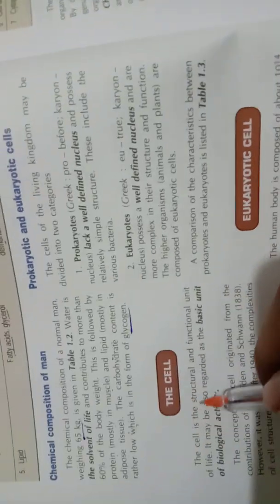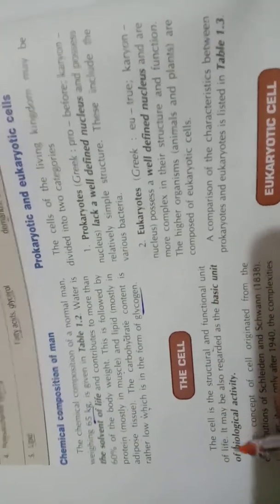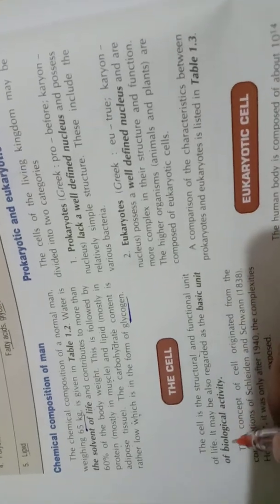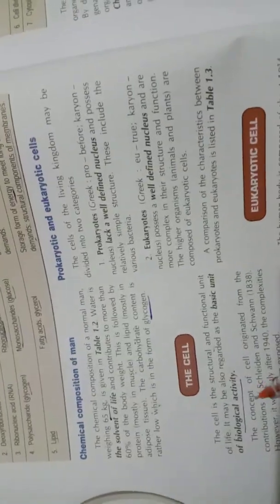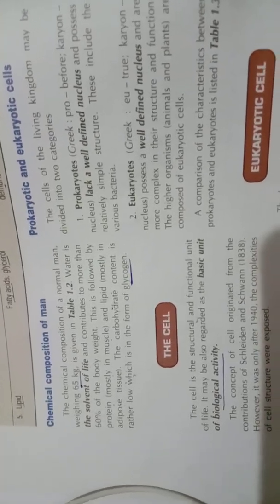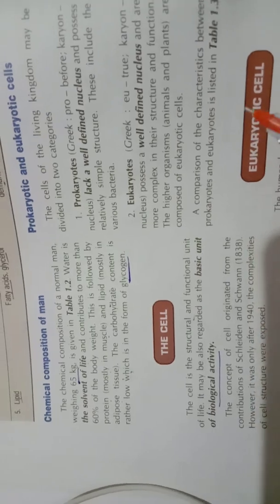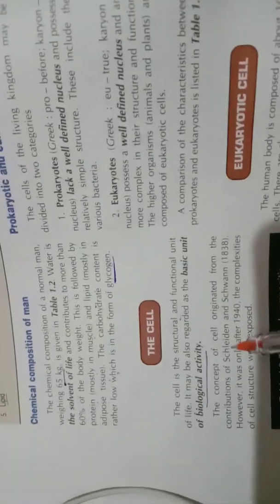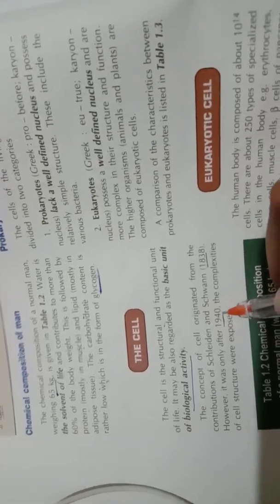The cell is the structural and functional unit of life. It may also be regarded as a basic unit of biological activity. The cell wall in plant cells and bacteria provides protection to the cell. The concept of the cell originated from the contribution of Schleiden and others around 1838, and it was only after 1940 that the complexities of cell structure were further exposed.